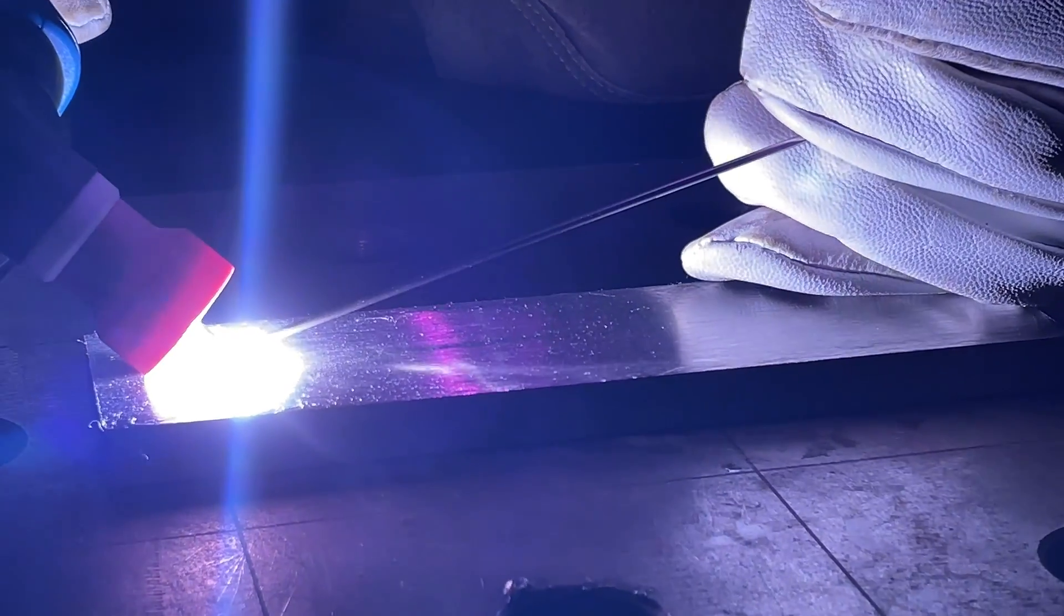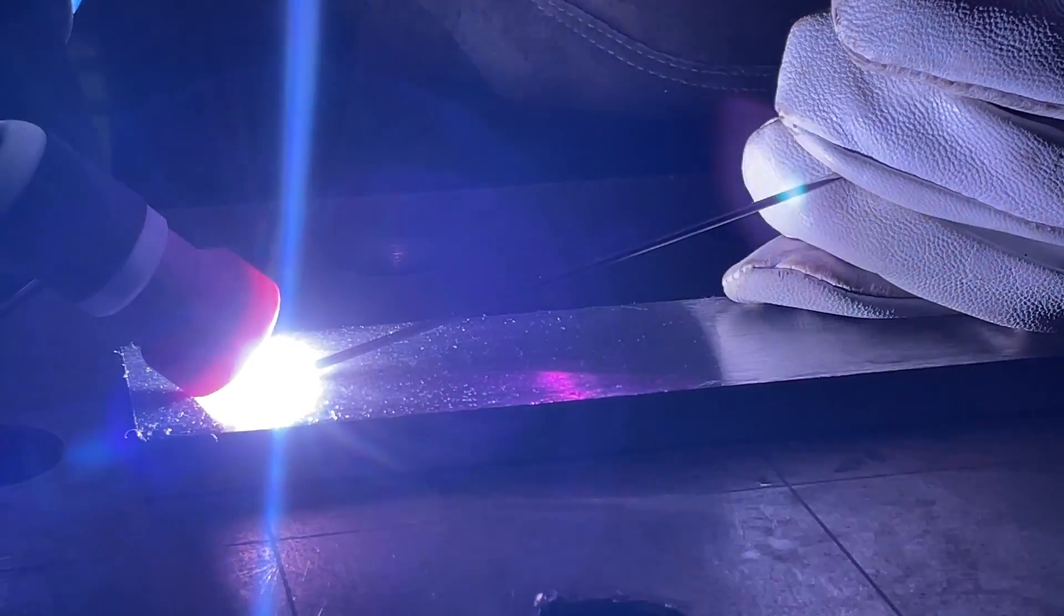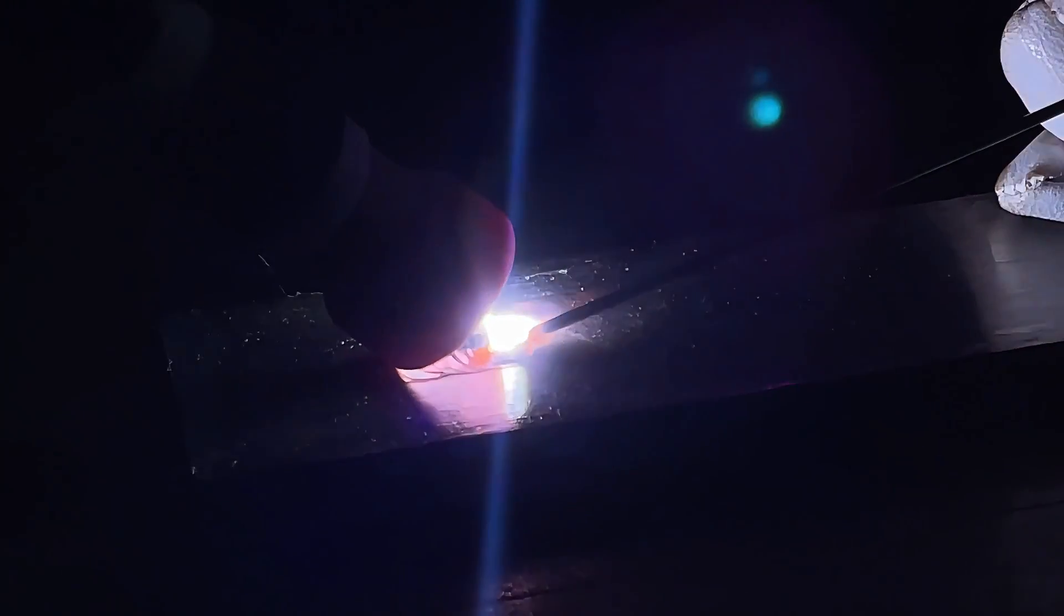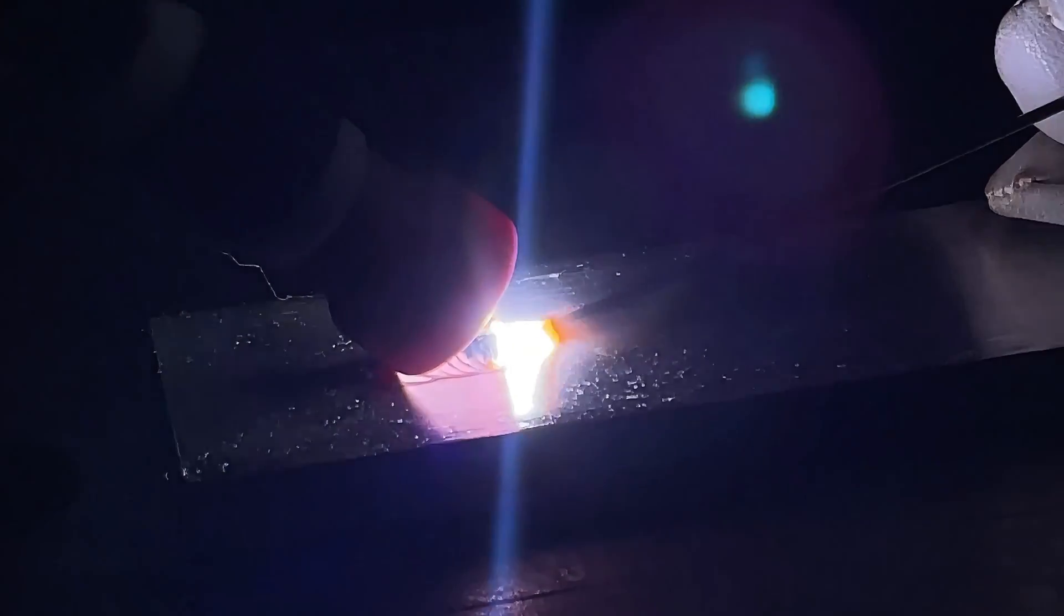When striking an arc, hold the torch at a 45-degree angle to the workpiece. Start the arc using a high-frequency start to avoid contamination. Establish a small controlled weld pool at the starting point and introduce the filler rod into the leading edge of the weld pool maintaining a consistent feed rate.